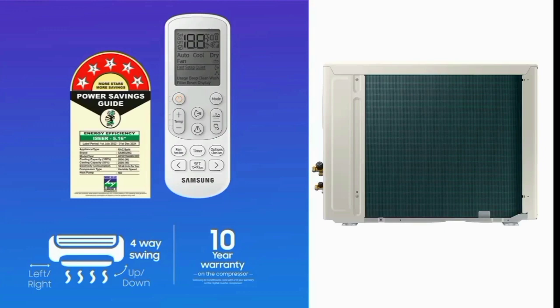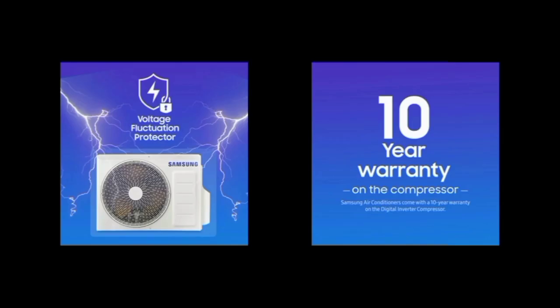Sometimes power supply can be unstable. With this product, there is a chance of damage from voltage fluctuations. Samsung provides voltage protection so that when power is unstable, the product stays protected. This voltage protection is built into the product.